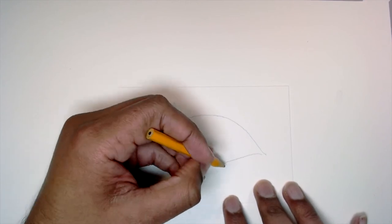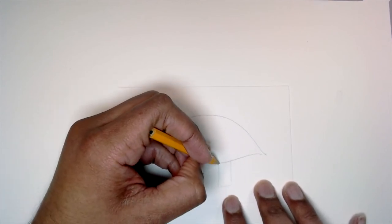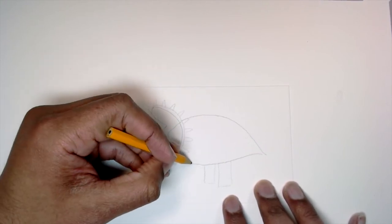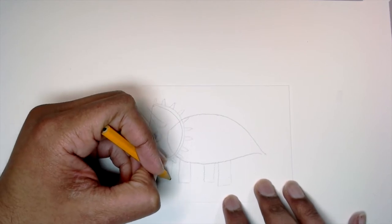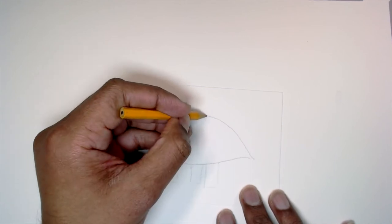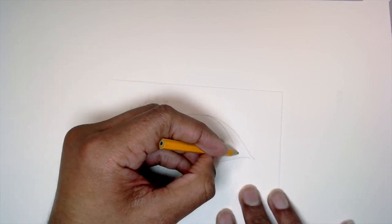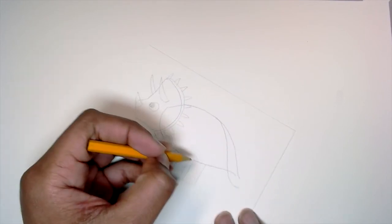And then I'll draw the legs. And then the back of mine is looking a little funny, so I'm going to try to fix that. So I want it to come down like this instead. And that will be the tail.